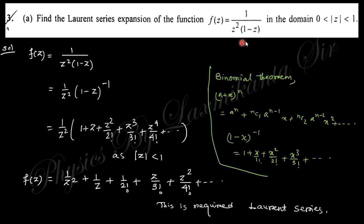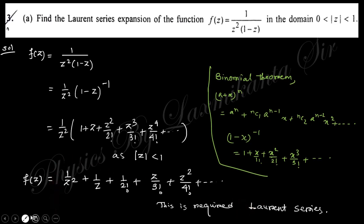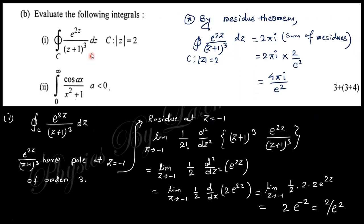The next question says: find the Laurent expansion of f(z) = 1/(z²(1−z)) for the domain 0 < |z| < 1. Writing 1/(1−z) = (1−z)^(−1), using the binomial theorem: (1−z)^(−1) = 1 + z + z² + ···. Multiplying by 1/z² gives the Laurent series. By the residue theorem, the coefficient of 1/z is the residue.